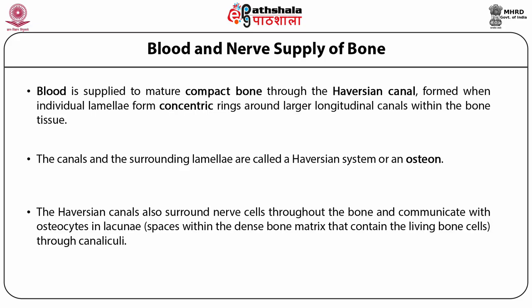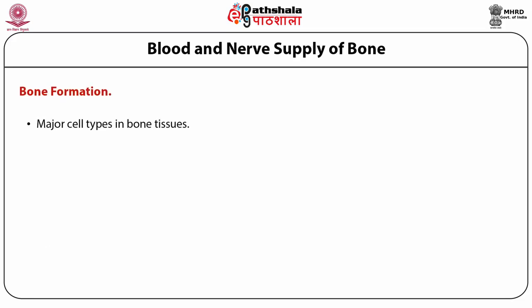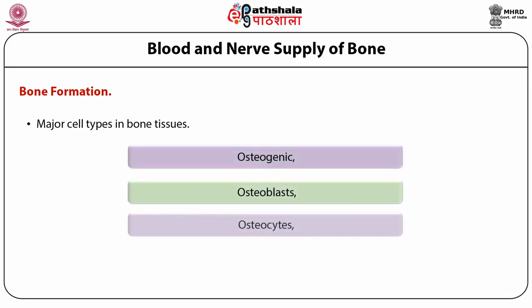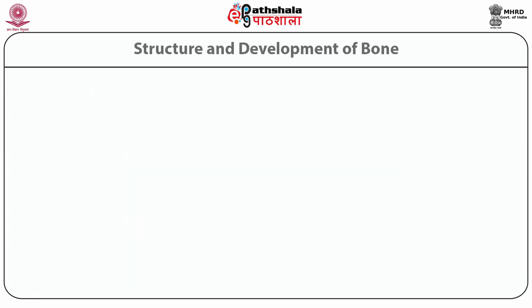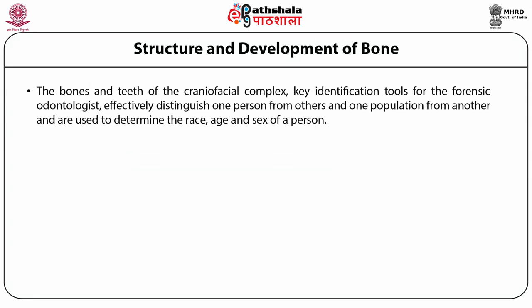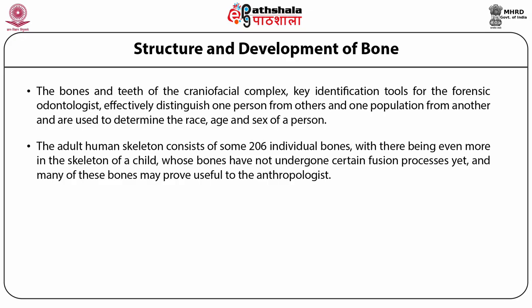This unique arrangement is conducive to mineral salt deposits and storage, which gives bone tissue its strength. Bone formation: the major cell types in bone tissues are osteogenic cells, osteoblasts, osteocytes, and osteoclasts. The bones and teeth of the craniofacial complex are key identification tools for the forensic odontologist, effectively distinguishing one person from others and one population from another, and are used to determine the race, age, and sex of a person.